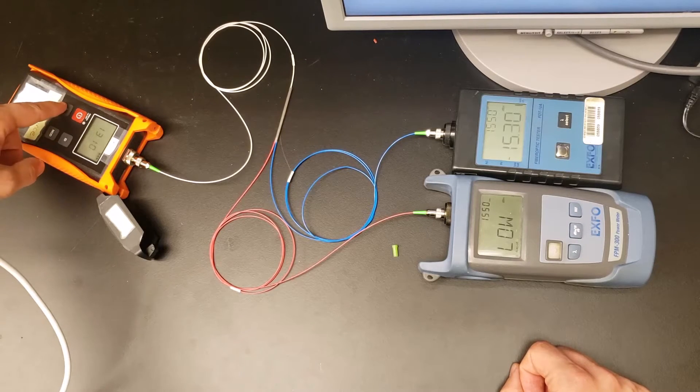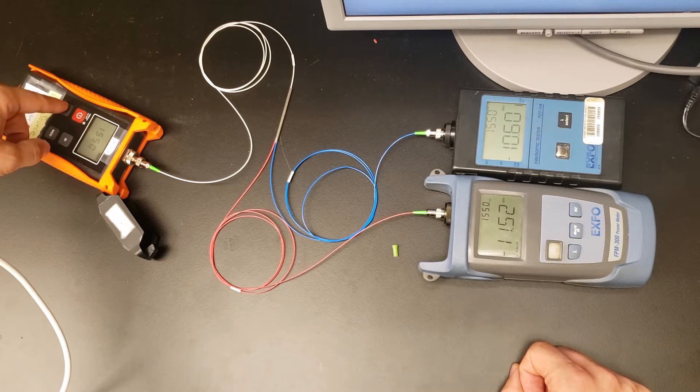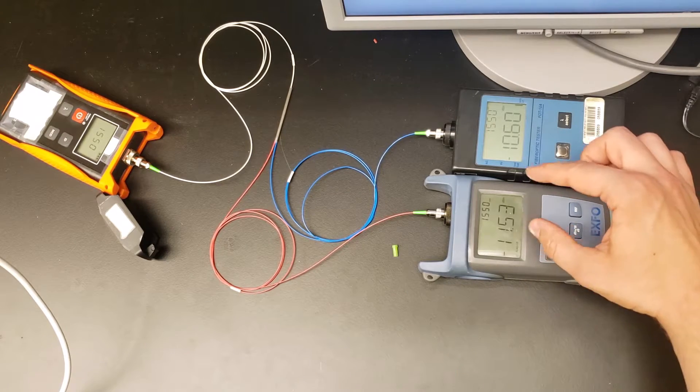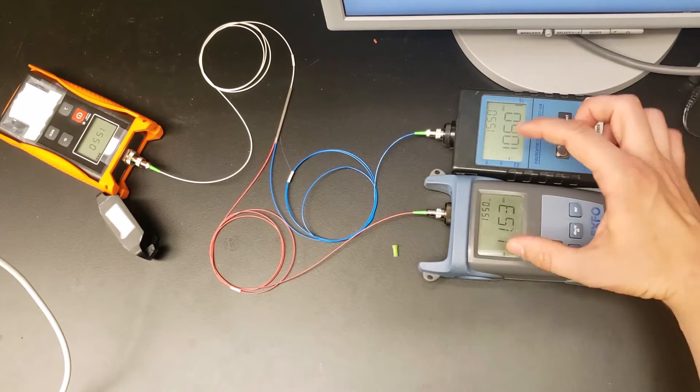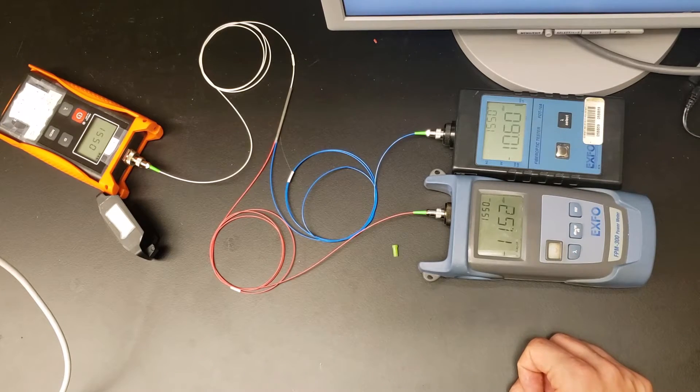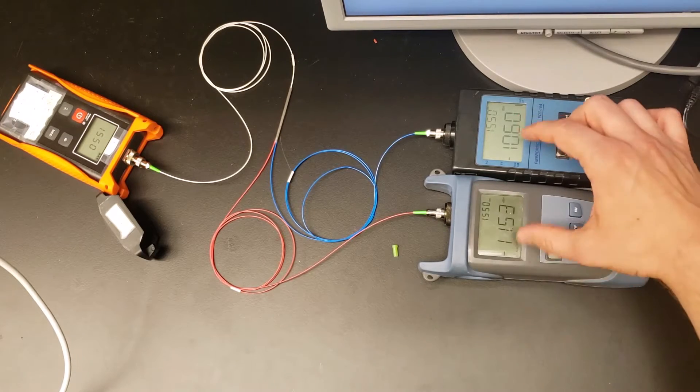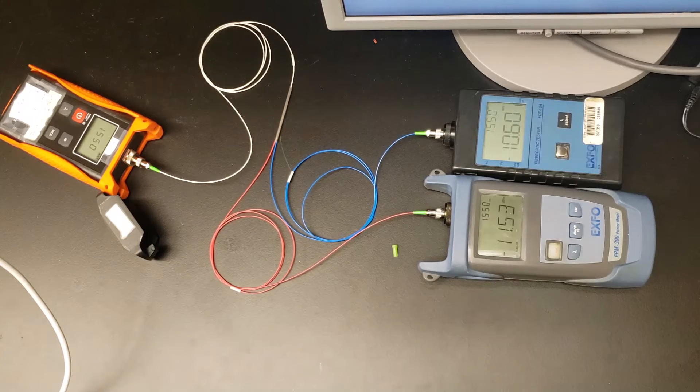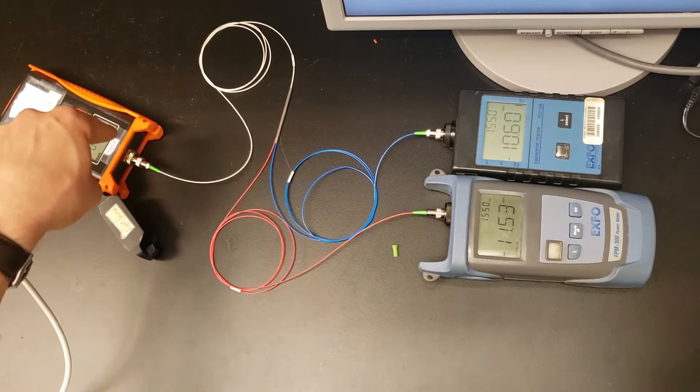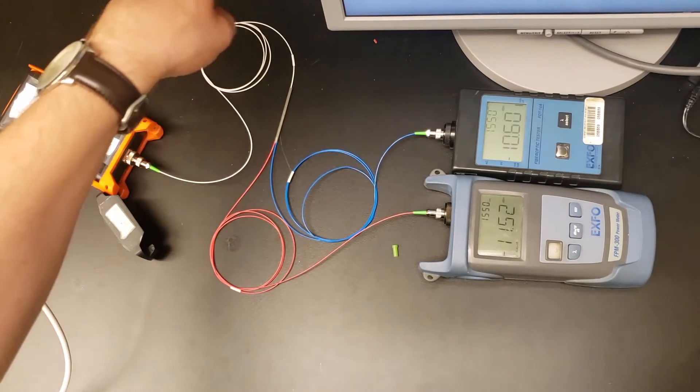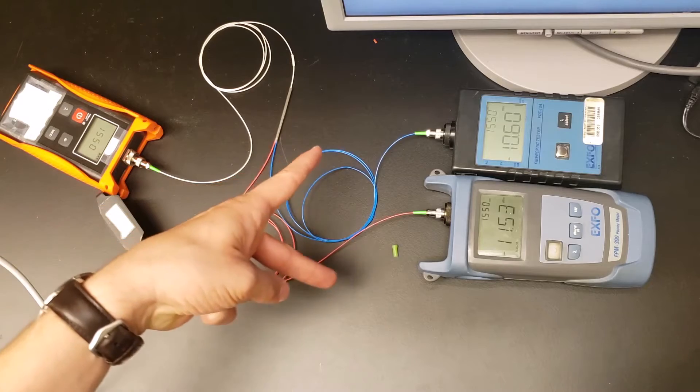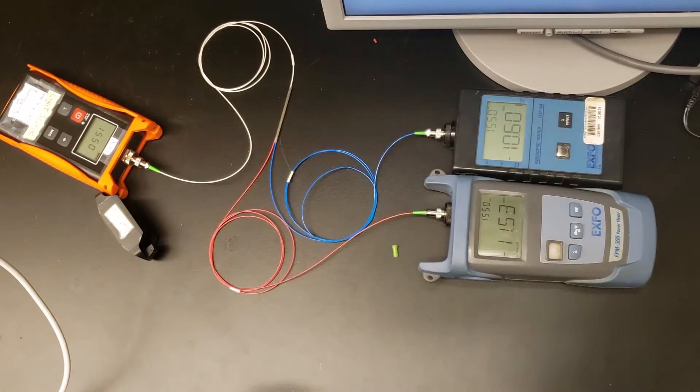We turn this on, set to the right wavelength, and notice this one shows negative 11.5 dBm, this one shows negative 10.6 dBm. These numbers are quite close to each other. This indicates this component is most likely a 50-50 coupler, meaning optical power sent into the common white port gets split almost evenly between these two branches into the power meters.